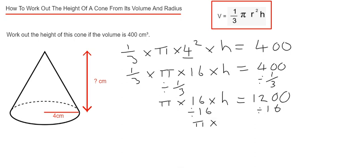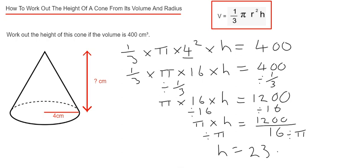So the next thing we're going to do is divide by 16. That will give us pi times h equals — I'm just going to write that as a fraction. And then finally we just need to divide this answer by pi. So we can put this on our calculator: it's 1,200 divided by 16 and then we divide that answer by pi. And we get height as 23.9 centimetres, and that is to 1 decimal place.